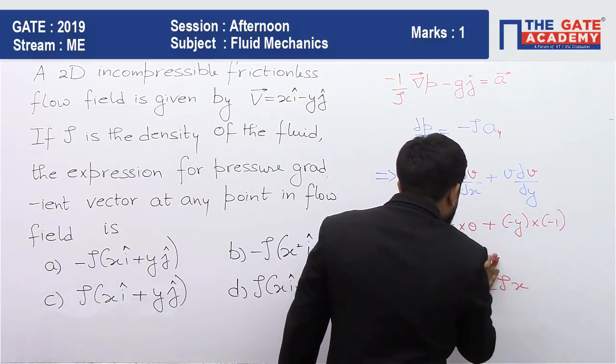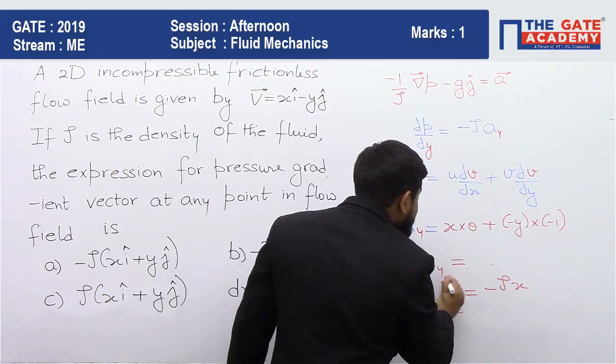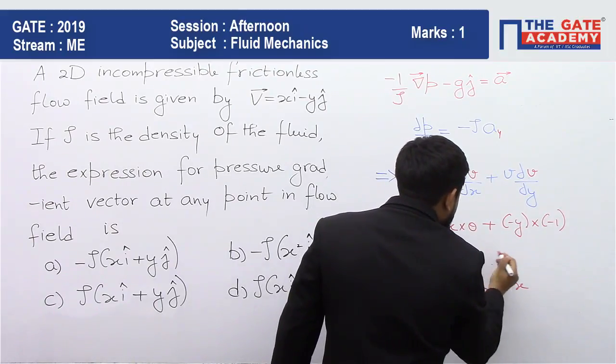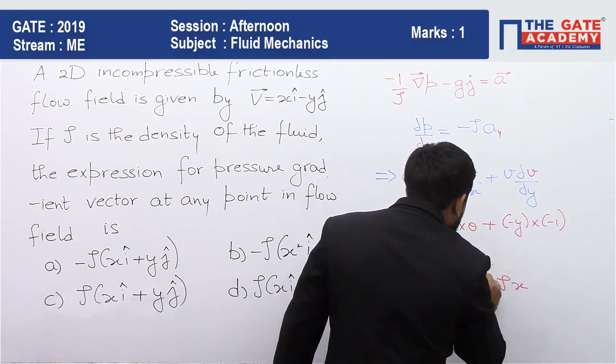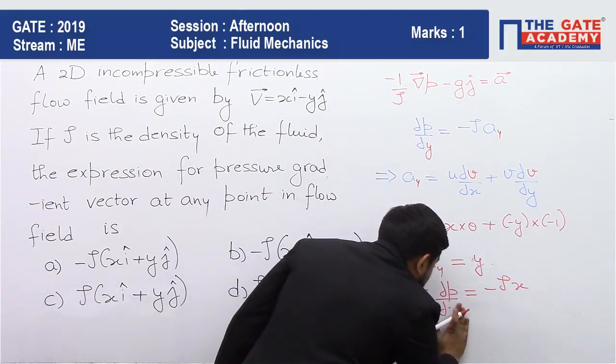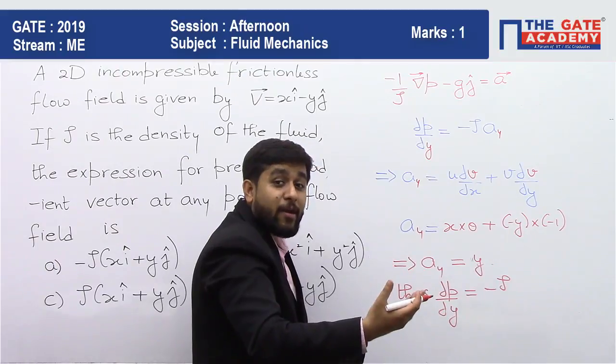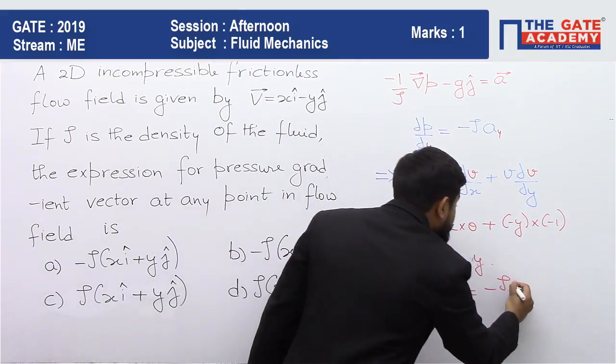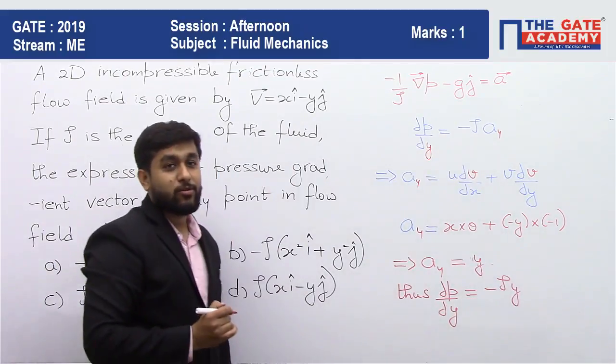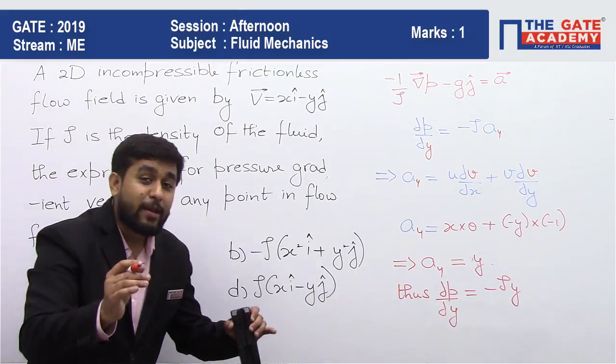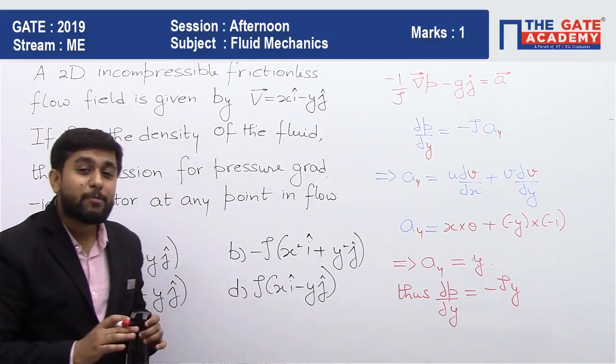So your ay is simply coming out as, sorry, it is coming out as y. So I think del P by del y will be written as minus rho a y, minus rho a y which is y. So this becomes minus rho y. So we have found out del P by del x also. We have found out del P by del y also.